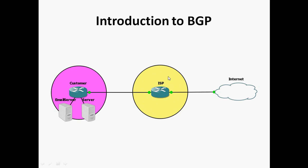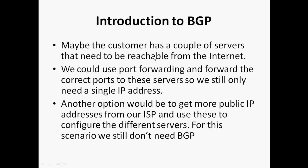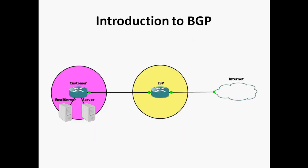This is another scenario. Now in the customer network, I am using two servers — for example an email server, web server, or FTP server. The ISP makes sure these two servers are reachable via the internet. There are two options: either we can use port forwarding and forward the correct ports to these servers — in which case we still only need a single IP address — or another option would be to get more public IP addresses from the ISP and use them to configure different servers.